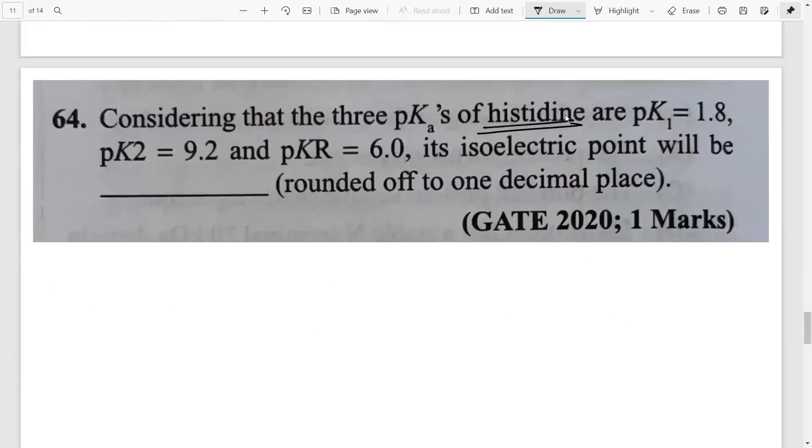So here you have histidine amino acid. Its three pK values are given. They have given you pK1, pK2 and pKR. They have asked you to calculate isoelectric point. So this much is definitely here that histidine is an amino acid that has an ionizable R group and therefore you have this. So definitely to take the pI you have to take average of the pKR.